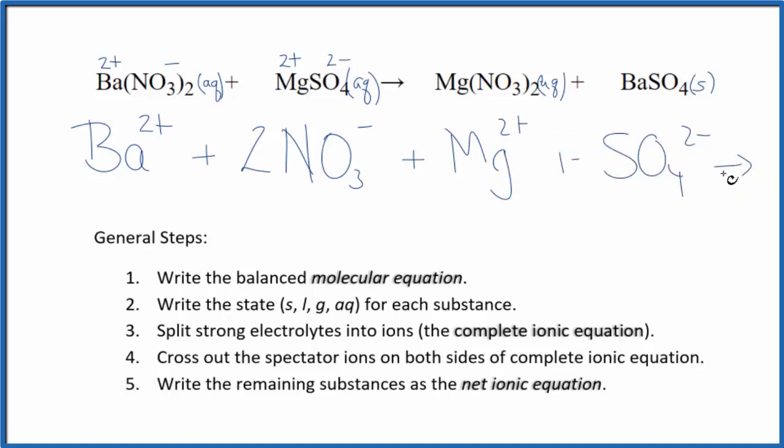And these are our reactants in the net ionic equation. For the products, we said Mg2+, the nitrate, that's 1 minus. So we'll have Mg2+ plus two nitrate ions. And then for the barium sulfate, it's a solid. We don't split solids apart in net ionic equations. So that just stays together as BaSO4.